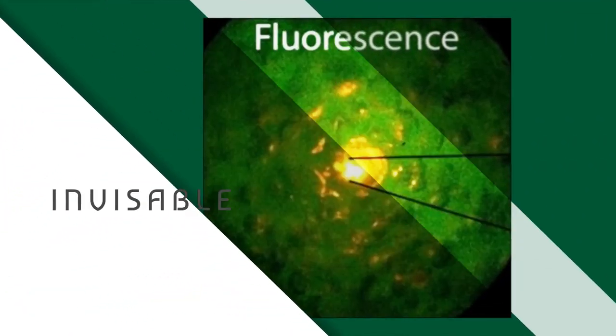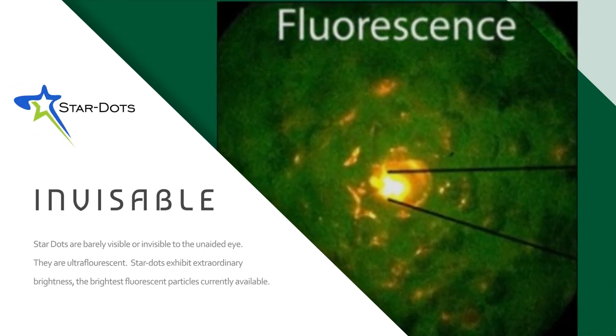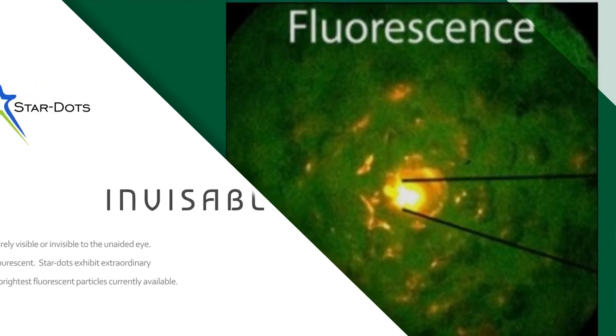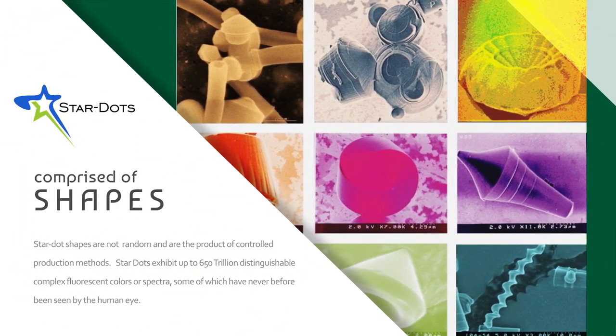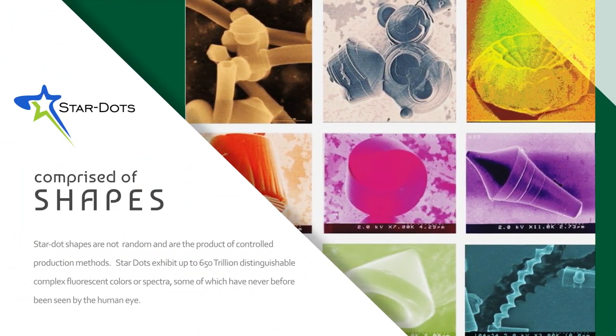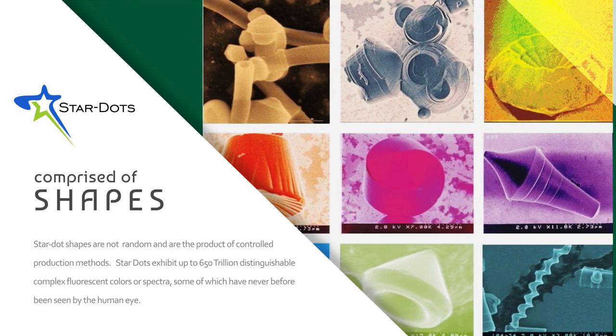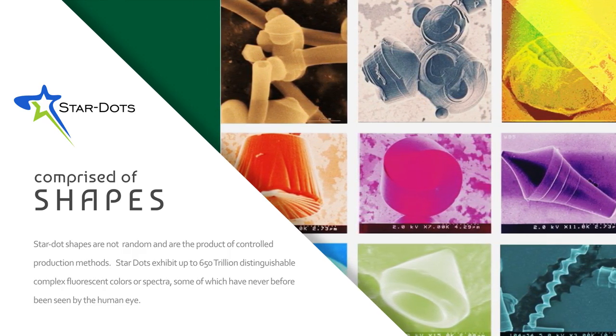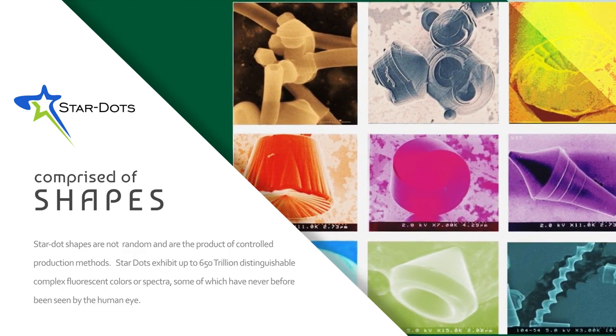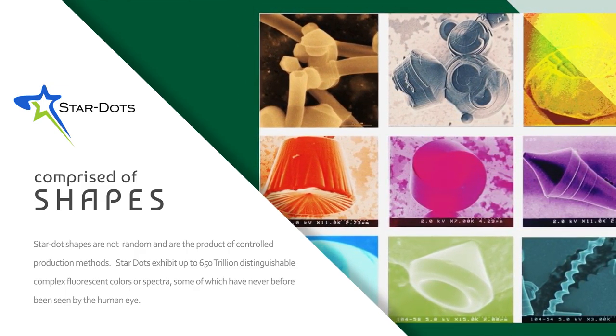Star dots are barely visible or invisible to the unaided eye and are ultra-fluorescent, exhibiting extraordinary brightness. They are comprised of shapes designed as part of their production that are not found in nature. Star dot shapes are not random and are the product of controlled production methods. Star dots exhibit up to 650 trillion distinguishable complex fluorescent colors, or spectra, some of which have never before been seen by the human eye.